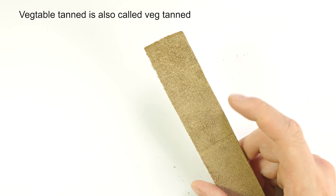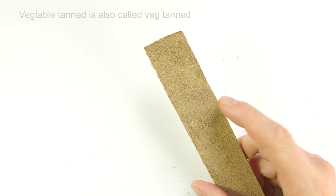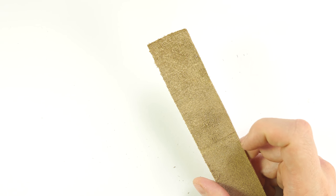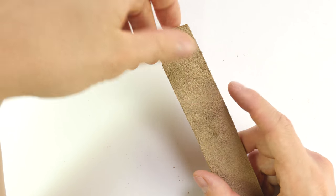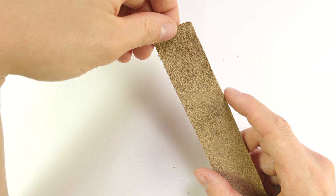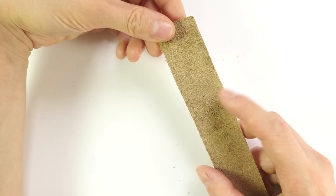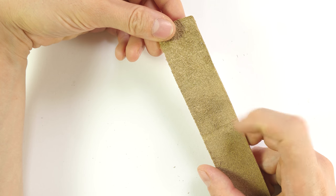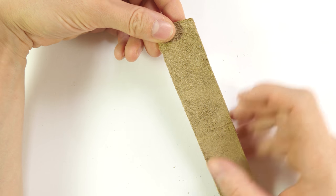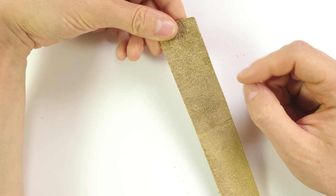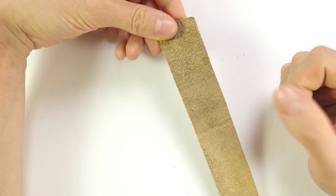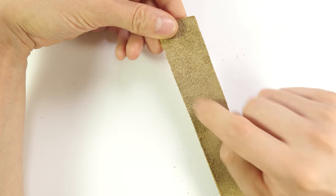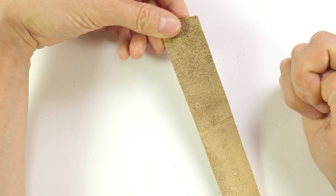There are many other types of leathers available, but vegetable tanned is what you want. This rough side or the flesh side is going to do the polishing. Now you can cut off a leather strap off of an old belt, but mass produced belts often have too smooth of a surface for polishing. But if your belt has this rough surface, then it's good to go.